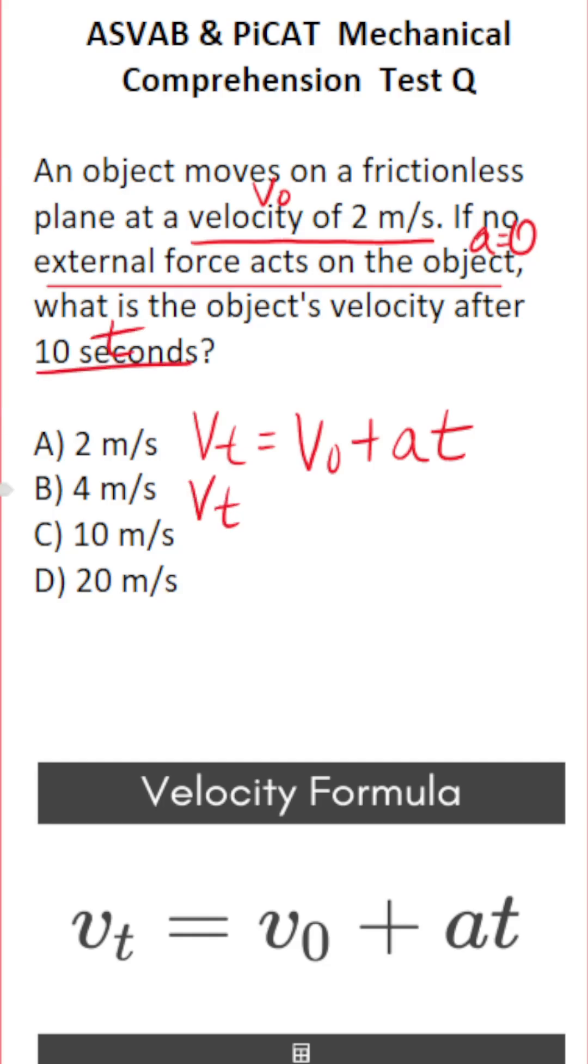So let's plug those values in accordingly. Two meters a second plus, no acceleration in this case, so that's going to be zero for A times 10 seconds for time. So our final velocity Vt equals two.